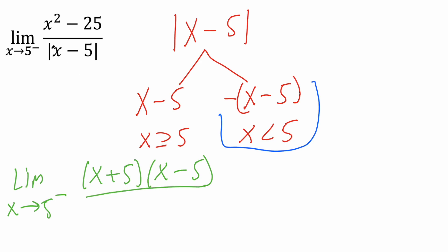And our denominator instead of having the absolute value of x minus 5 I'm going to copy this form right here. So we have negative parentheses x minus 5.